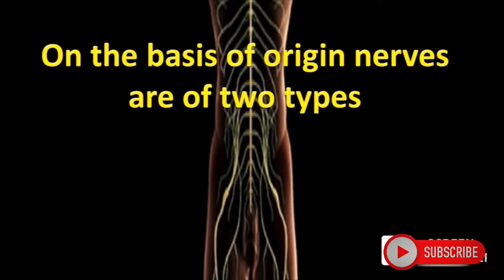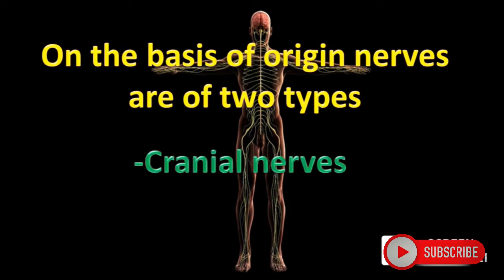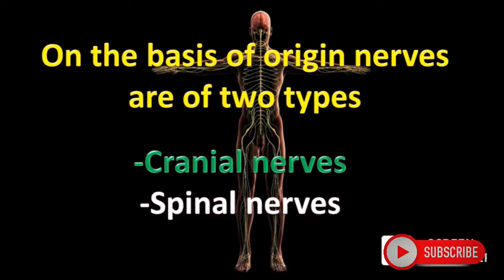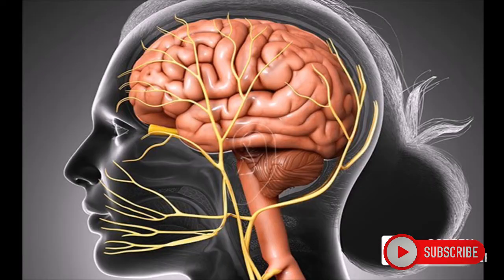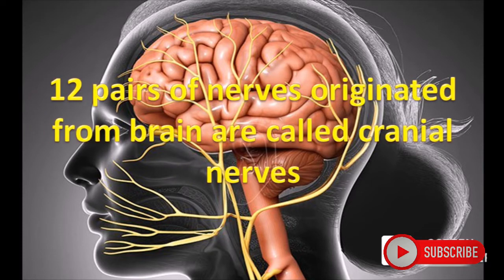On the basis of origin, nerves are of two types: cranial nerves and spinal nerves. Twelve pairs of nerves originating from the brain are called cranial nerves.